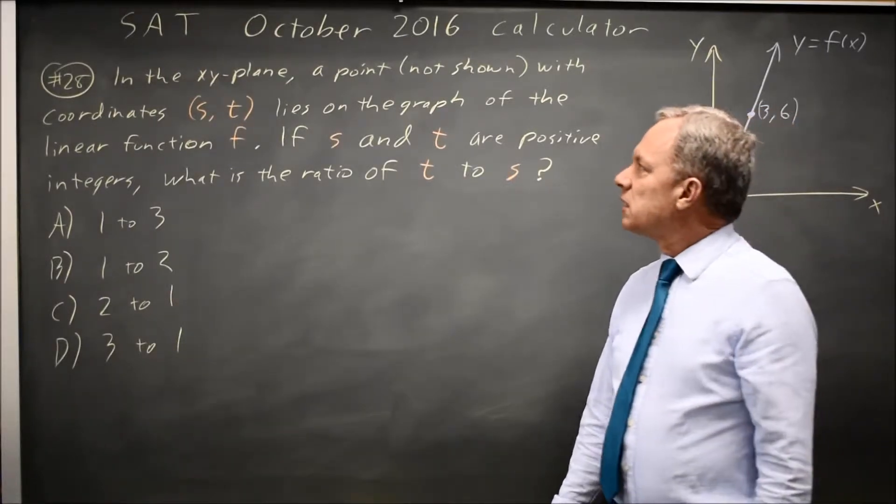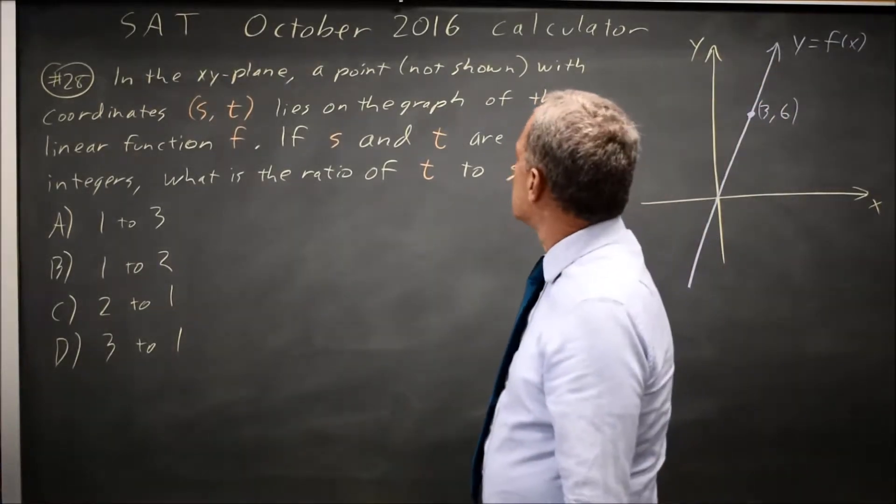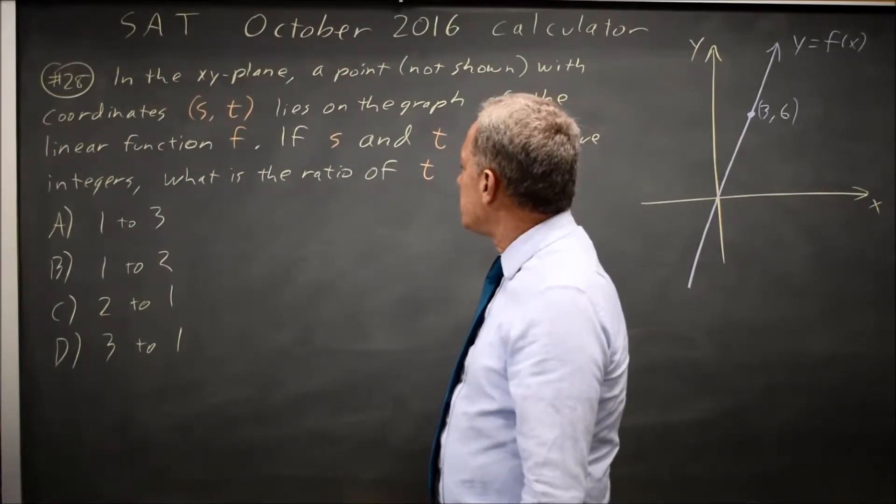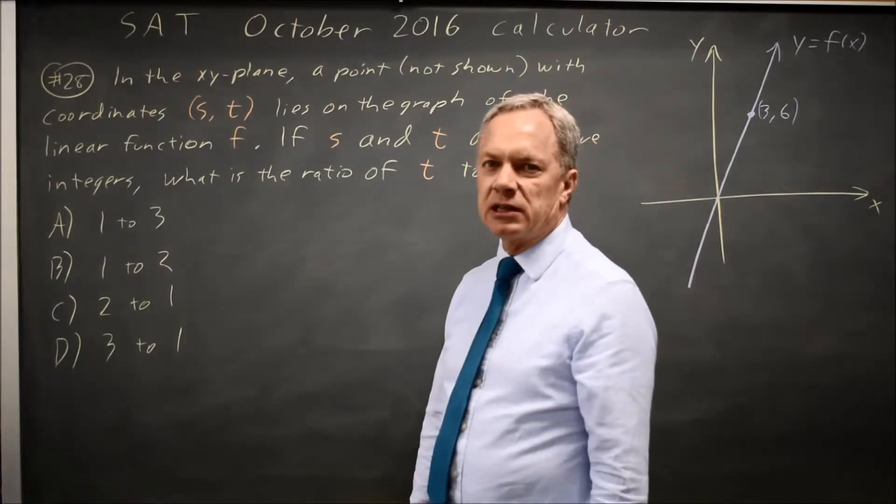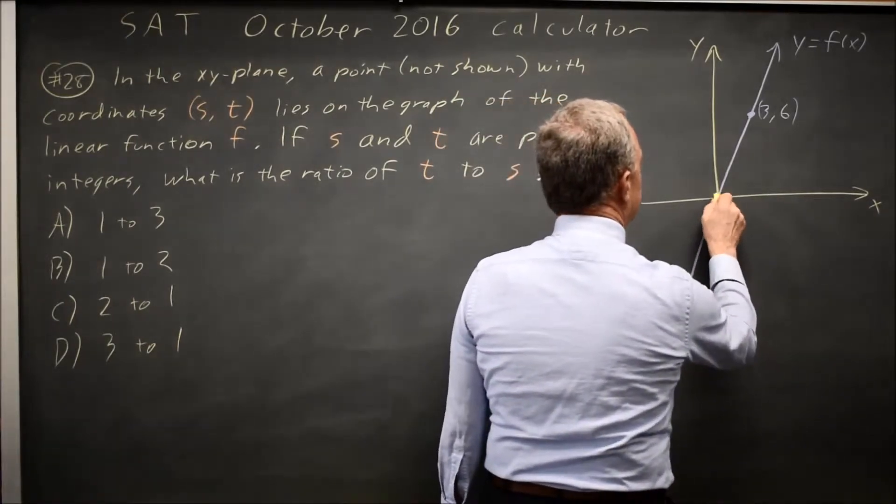College Board tells us that a point on the line for y equals f of x has coordinates (s, t), and they want the ratio of t to s. You can find the equation of this line which also includes the origin.